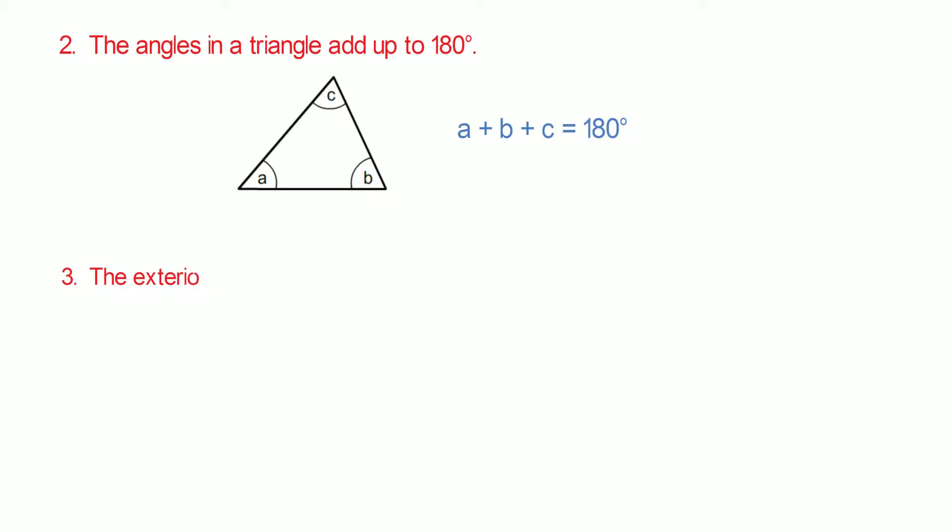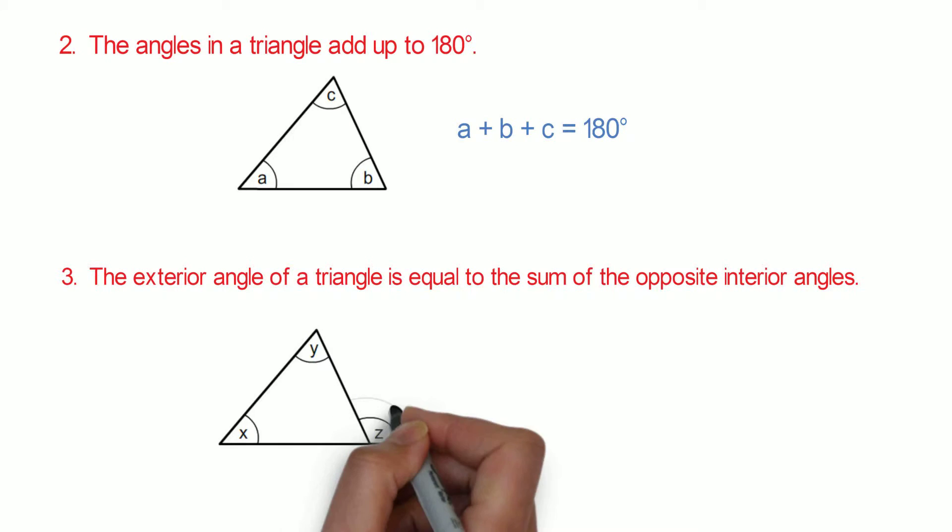Number three, the exterior angle of a triangle is equal to the sum of the opposite interior angles. In this triangle, Z is the exterior angle and therefore Z equals X plus Y.